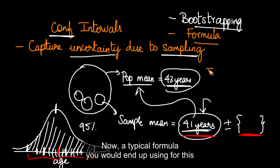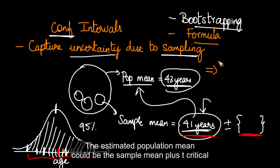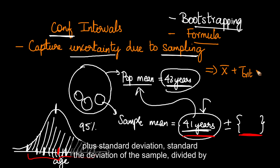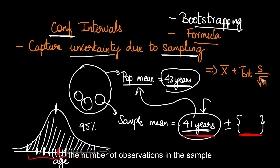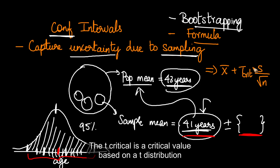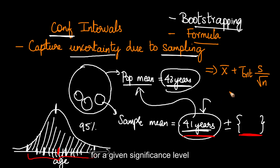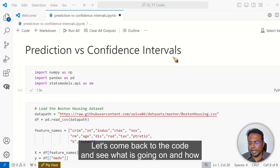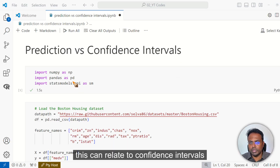A typical formula you would use for this might look something like this: the estimated population mean equals the sample mean plus T-critical multiplied by the standard deviation of the sample divided by the number of observations in the sample. The T-critical is a critical value based on a T distribution for a given significance level. Let's come back to the code and see what is going on and how this relates to confidence intervals.